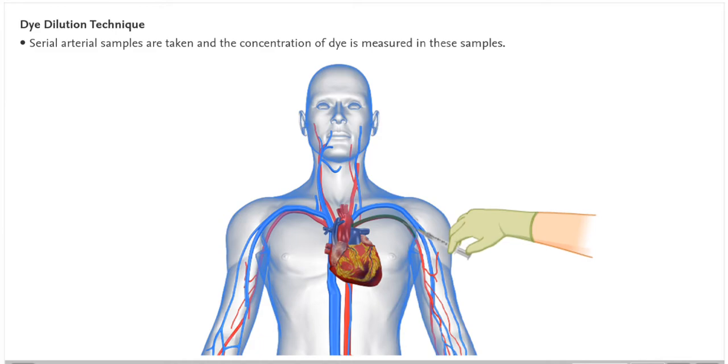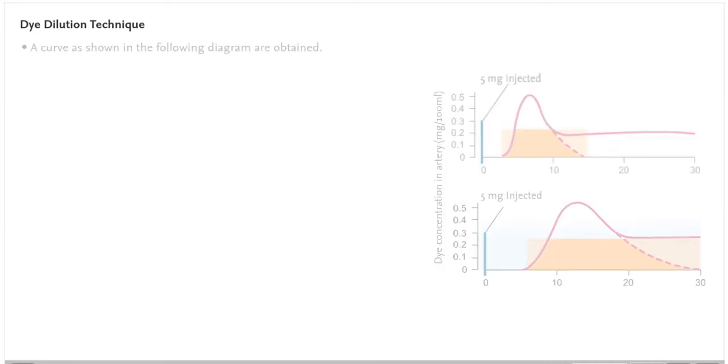Serial arterial samples are taken and the concentration of dye is measured in these samples. A curve, as shown in the following diagram, is obtained.